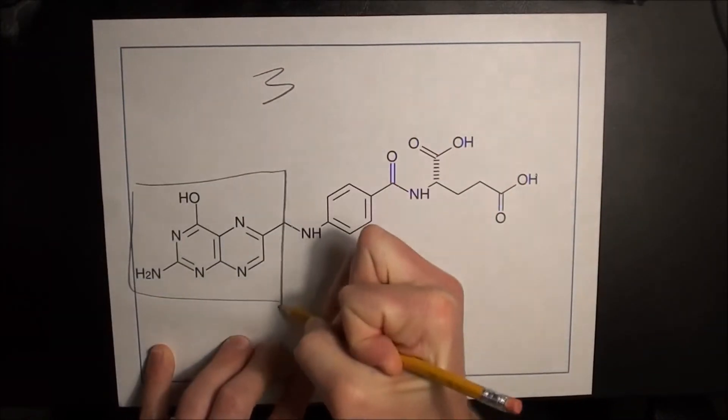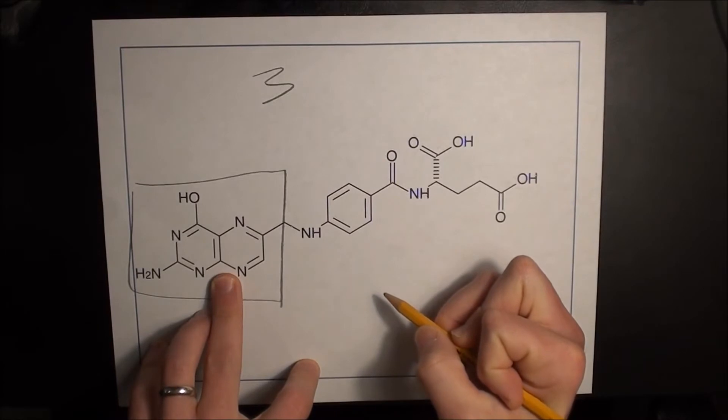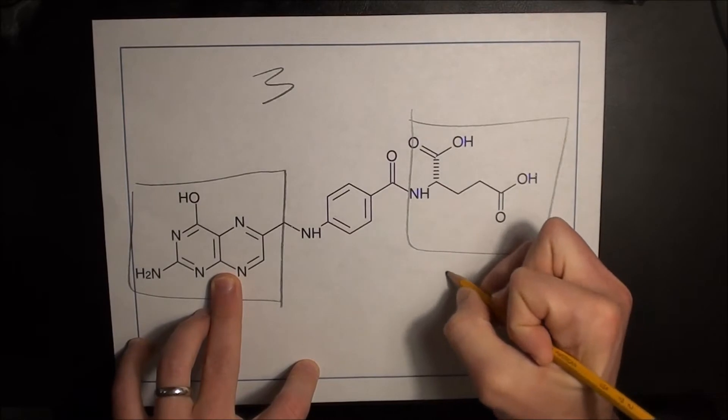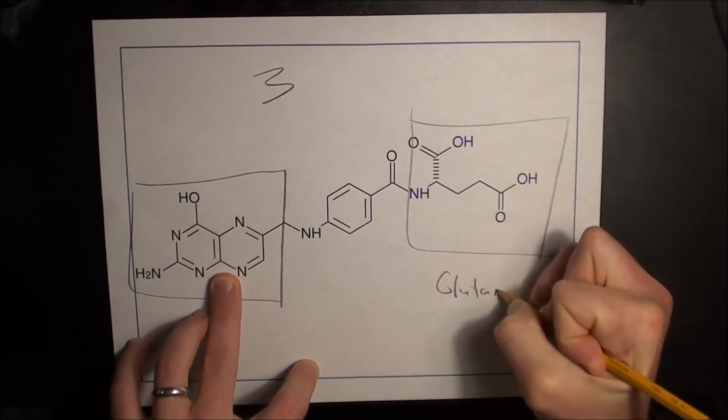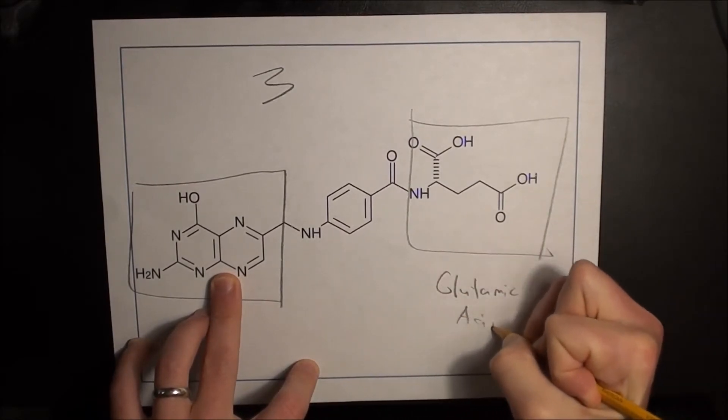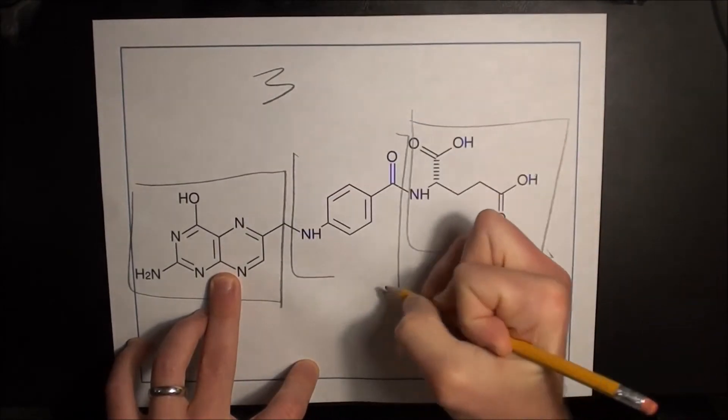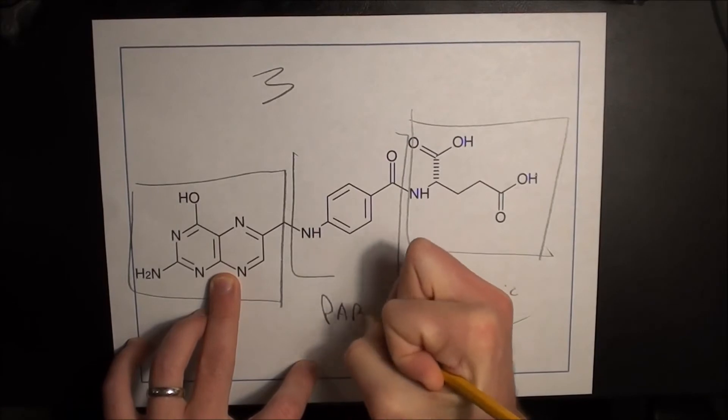Over here, you have these nitrogen rings. Over here, you have an amino acid, glutamic acid. And right here in the middle, this is PABA.